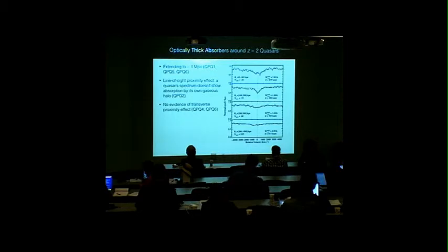The previous work has focused primarily on H1, and here's a summary of QPQ1-2-6. These are stacked spectra of background quasars at different impact parameter bins. X axis is relative velocity relative to the foreground quasar's redshift. Y axis is flux normalized to the quasar's continuum. For each composite spectrum, there is a Gaussian best fit overplotted on it.